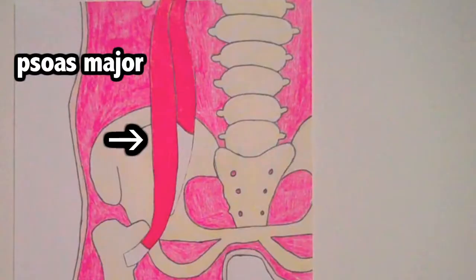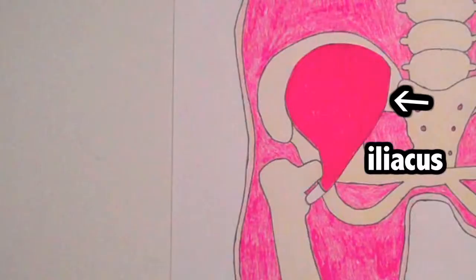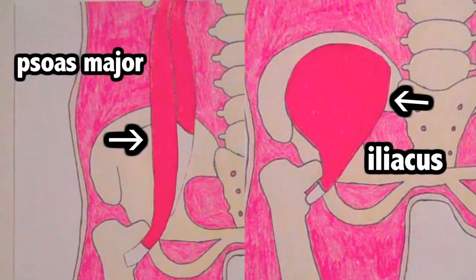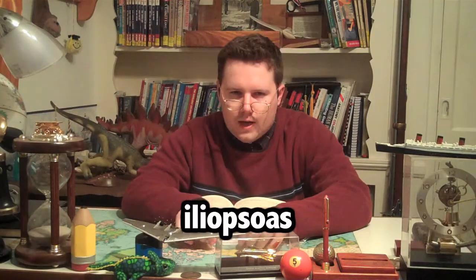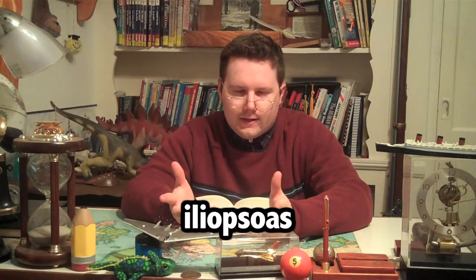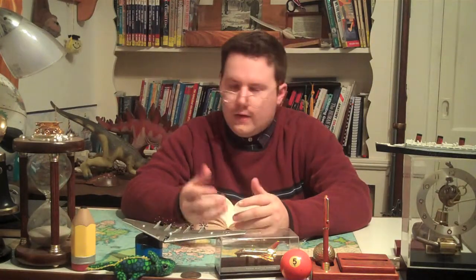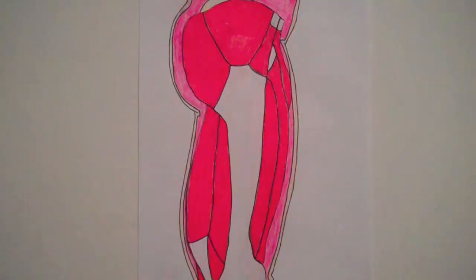The next muscles we'll look at are the psoas major and the iliacus. These muscles work together to help flex the thigh. A lot of people like to combine both the psoas major and iliacus into one major muscle — they call it the iliopsoas. They combined two unusual names to come up with an even more unusual name.